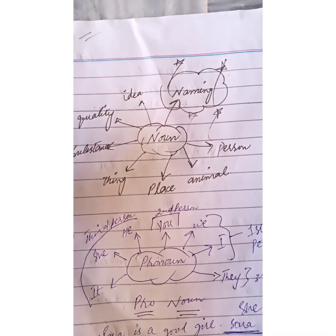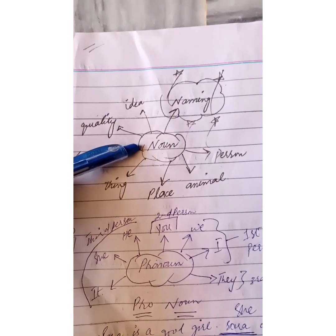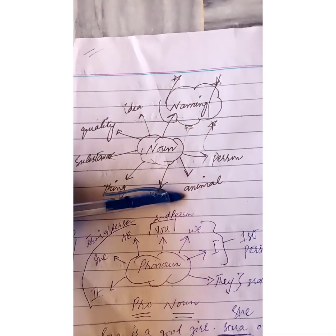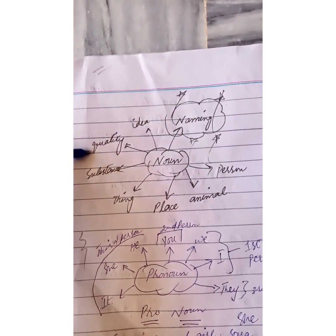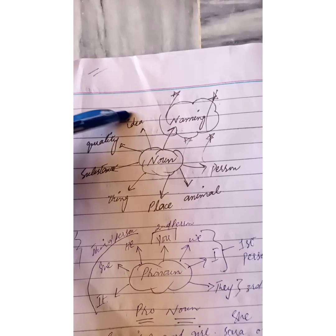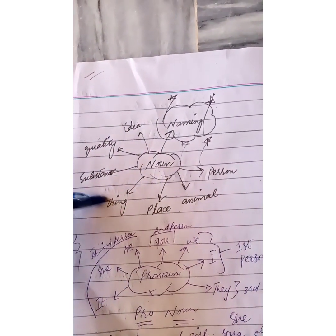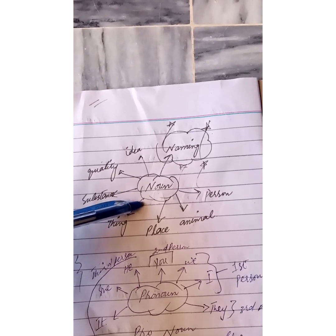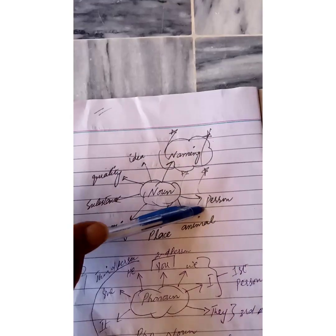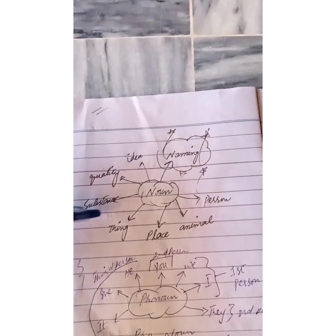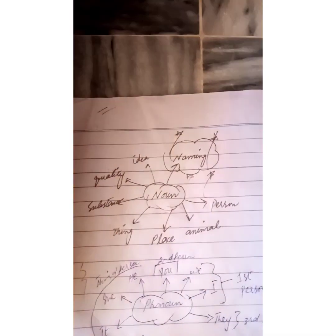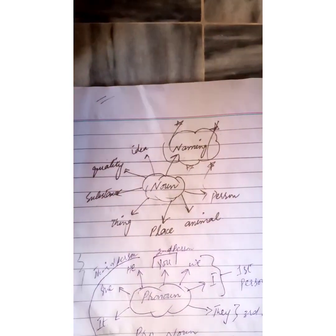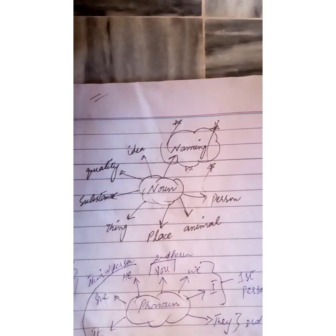First of all we'll talk about our very first part of speech, and that is noun. Noun is actually a naming word. We can name a person, animal, place, thing, substance, quality, and idea — all these groups or classes can come into this category. There are also some kinds of nouns: common noun, proper noun, concrete noun, abstract noun, and collective noun.